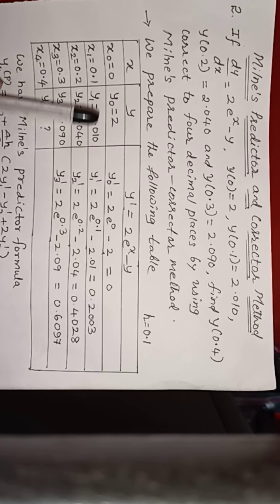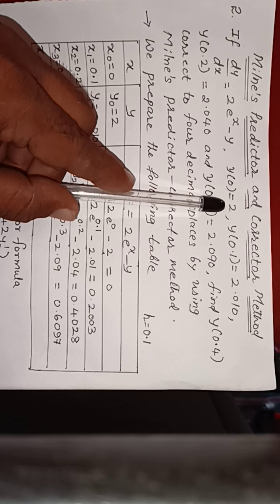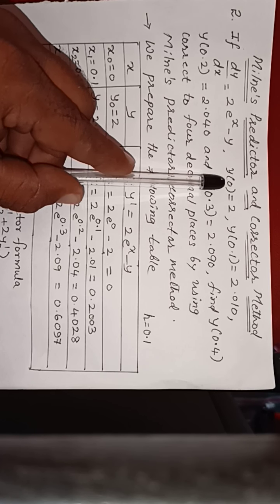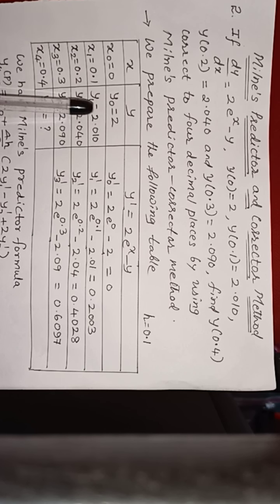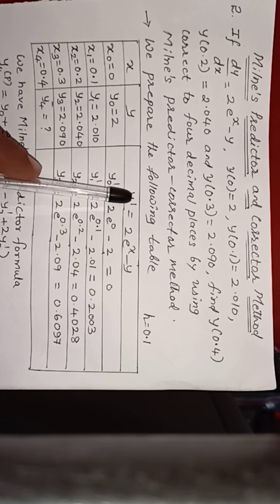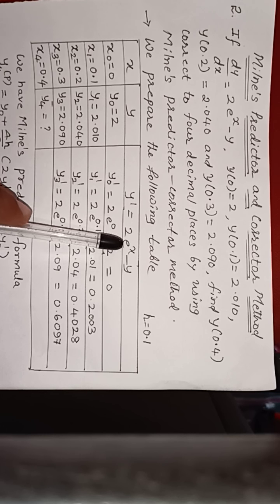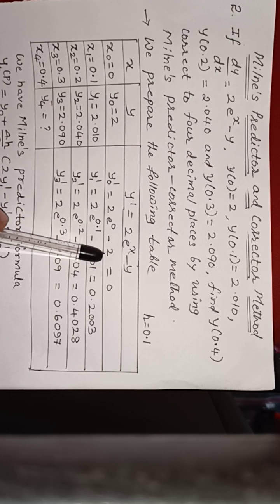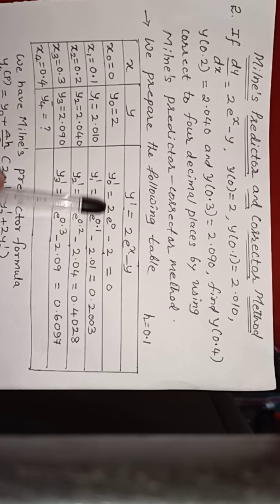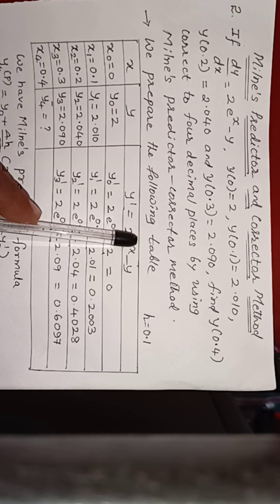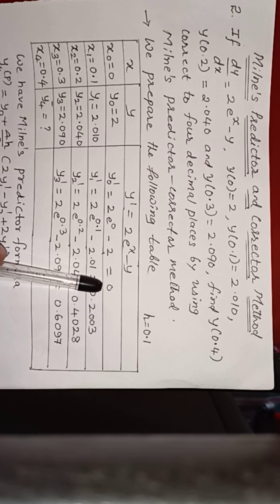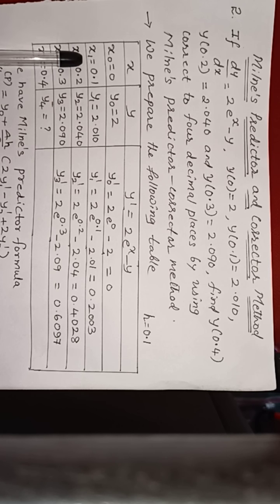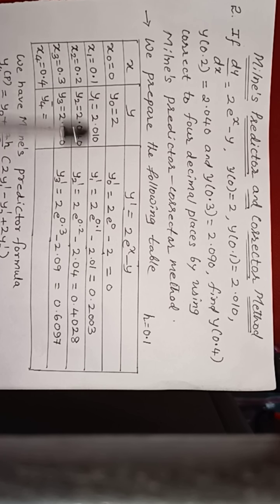x0 = 0. y(x0) = y0 = 2. So y0 dash = 2 into e raised to 0 minus y. y0 is 2, so inserting these values: e raised to 0 is 1, so 2 into 1 minus 2 = 0. That is, y0 dash = 0. Next, x1 = 0.1.